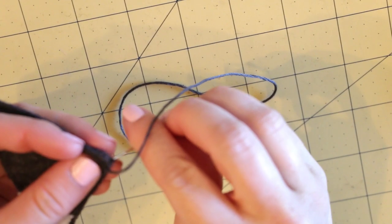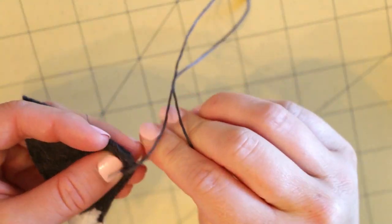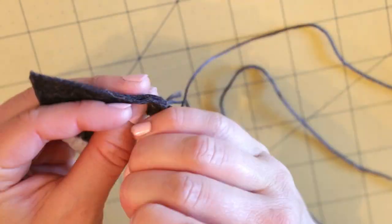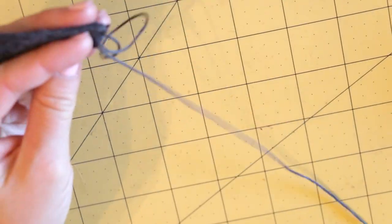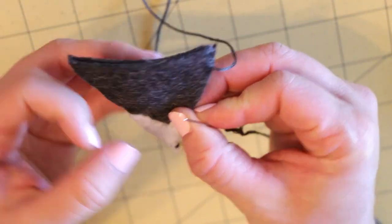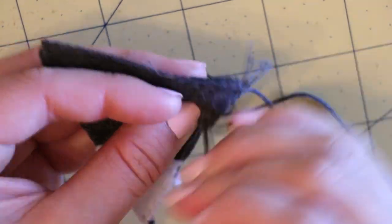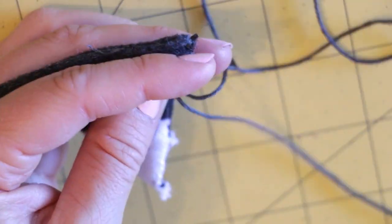For my stitches, I'm going under through the shape, then tie a knot at the end of the embroidery thread, then pulling it through and back underneath. This is called a simple hemming stitch.